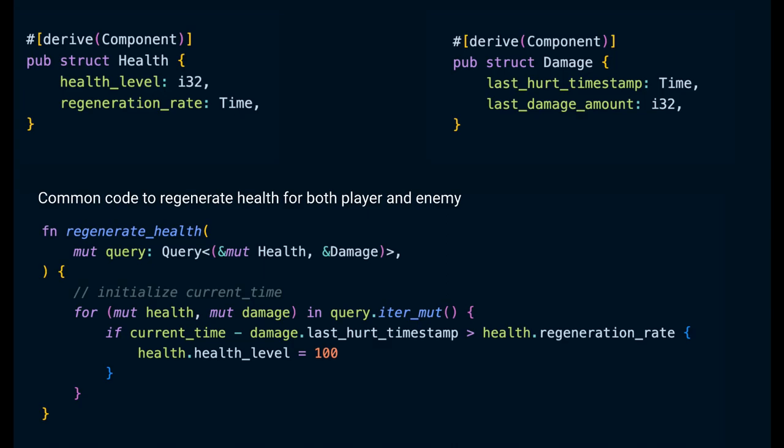ECS and the ECS framework does this much more elegantly. We have the health and the damage component attached to different entities. Those entities could be players or enemies depending on what other components they have. All we need to do is write a system with health and damage in the query and implement a health generation logic which is common across all entities.